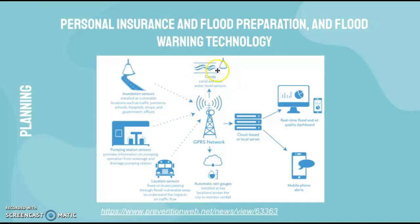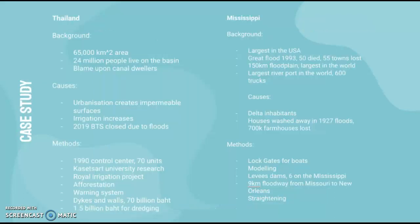These networks may include canal and river water level sensors, inundation sensors installed at vulnerable locations such as traffic junctions, schools, hospitals, shops, government offices, and pumping stations, as well as location sensors and automatic rain gauges installed at key locations across the city to monitor rainfall.